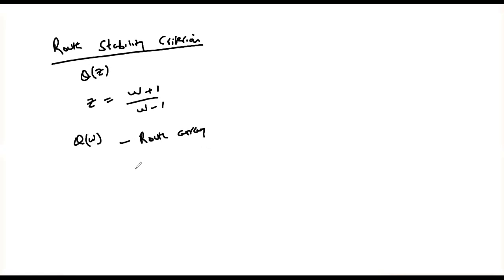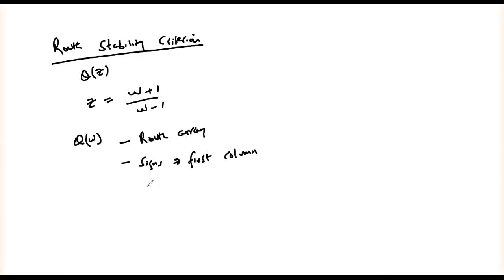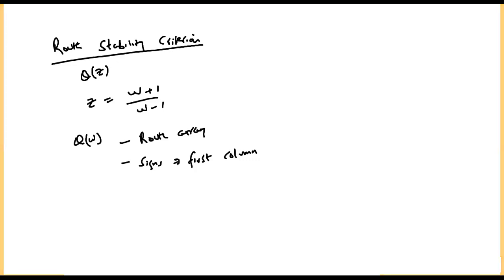We formulate the Routh array and from it we check the signs of the terms of the first column. If there are no sign changes in the first column, the system is stable. If there are sign changes, the system is unstable, and the number of sign changes indicates the number of poles that fall outside the unit circle in the z-plane.